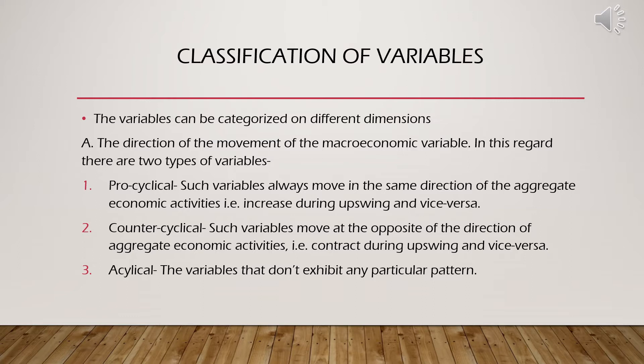Looking at the dimension of macroeconomic variables, there are three types. First is called procyclical. Procyclical means these macroeconomic variables move in the same direction as the business cycle. Whenever there is an economic upswing, these variables will also expand and their value will increase. Whenever there is a recession or downturn in the economy, their value will also decrease. These are known as procyclical variables.